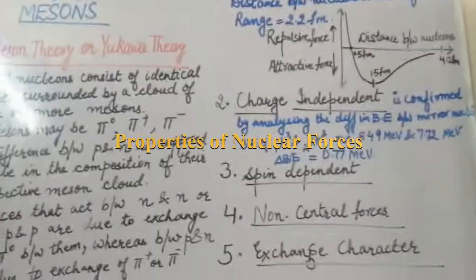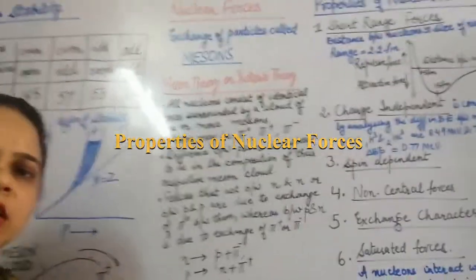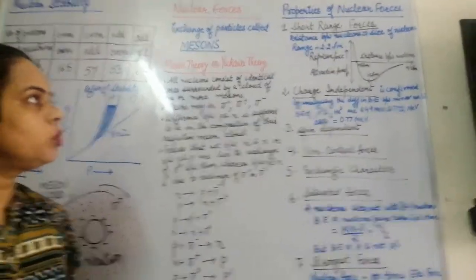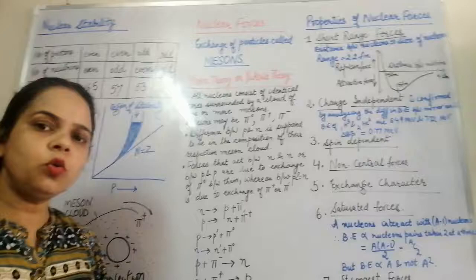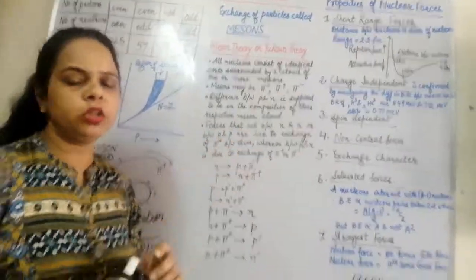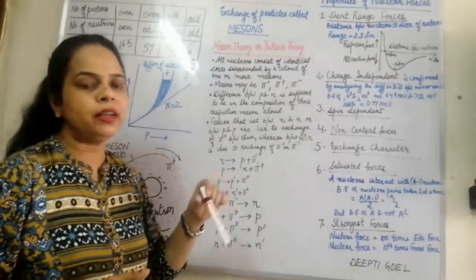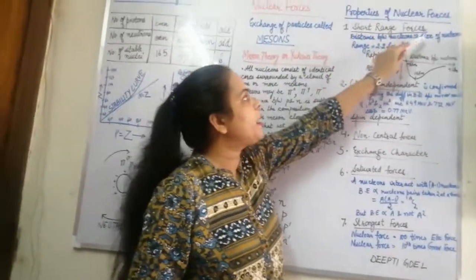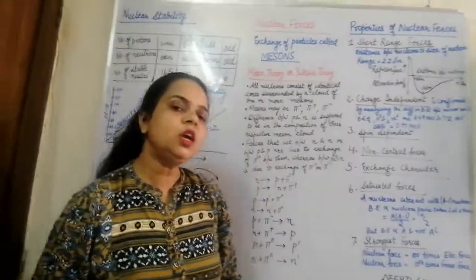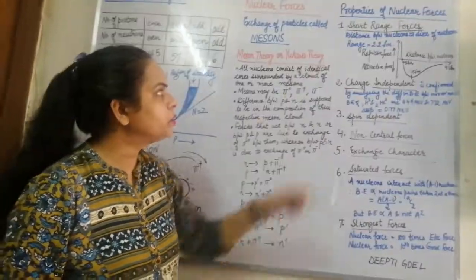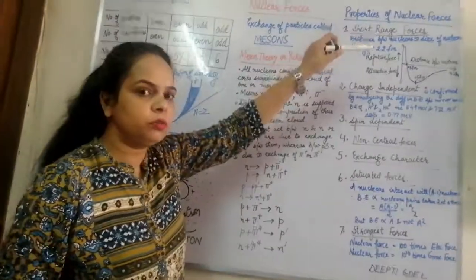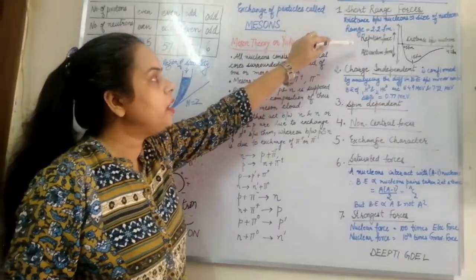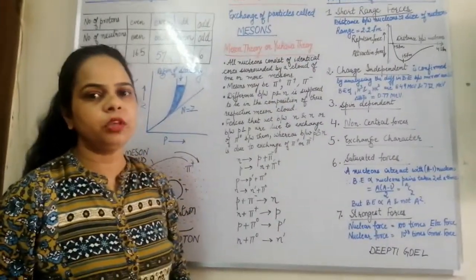The nuclear forces are only effective if the distance between the nucleons is comparable to the size of the nucleons. If the distance between the nucleons is comparable to the size of the nucleons, then only the nuclear forces are operative. The distance within which the nuclear forces are effective is called the range, and the range value was found to be 2.2 Fermi.